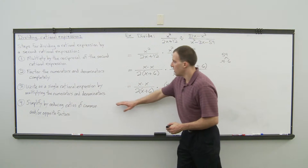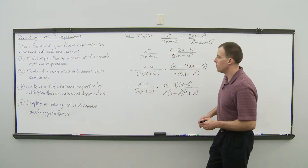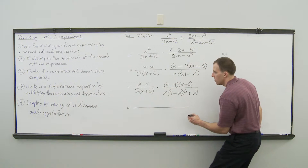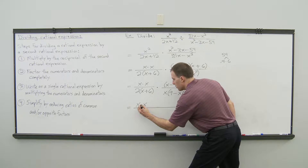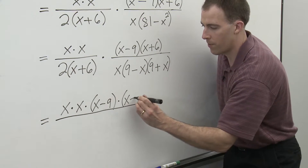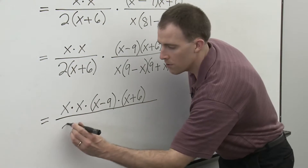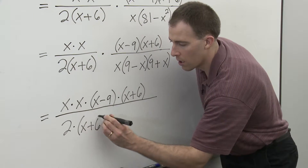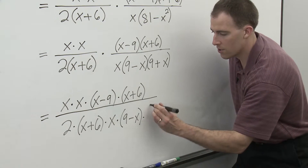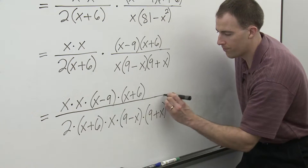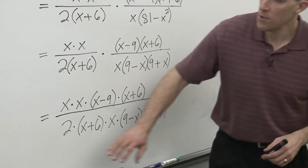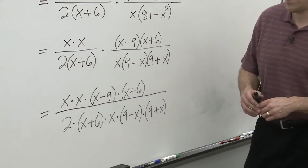We're up to step 3, which is to write it as a single rational expression by multiplying the numerators and the denominators. In the numerator we have x times x times x minus 9 times x plus 6. In the denominator we have 2 times x plus 6 times x times 9 minus x times 9 plus x. That's step 3 — expressing it as a single fraction.